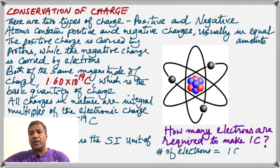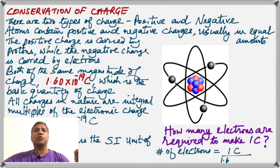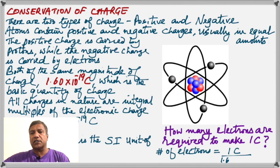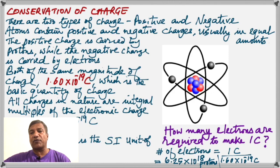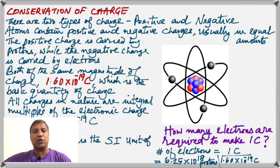Here is a question: how many electrons are required to make one coulomb of charge? When we hear the number 1, we may think it's a small amount, but 1 coulomb is actually a big quantity of charge. The number of electrons required is 1 divided by the charge of the electron, which gives us 6.25 times 10 to the 18. So if you want to charge a material by 1 coulomb, you have to remove 6.25 times 10 to the power 18 electrons.